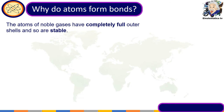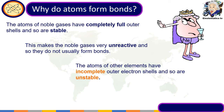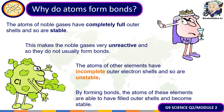Based on your discussion of the periodic table, atoms of noble gases such as neon and xenon have completely full outer shells and are considered stable. Because they are already stable, noble gases are typically unreactive and do not usually form bonds. On the other hand, atoms of other elements with incomplete outer shells are unstable, and by forming bonds they are able to have filled outer shells and become stable.